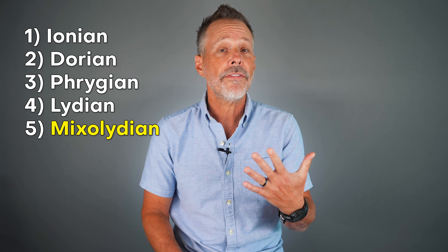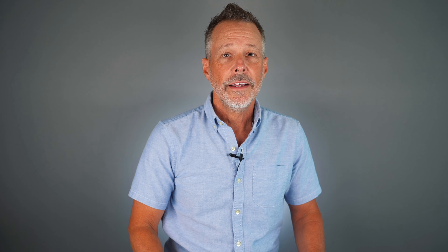We get the following jazz modes by doing this with each scale degree: one, Ionian; two, Dorian; three, Phrygian; four, Lydian; five, Mixolydian; six, Aeolian or natural minor; and seven, Locrian.